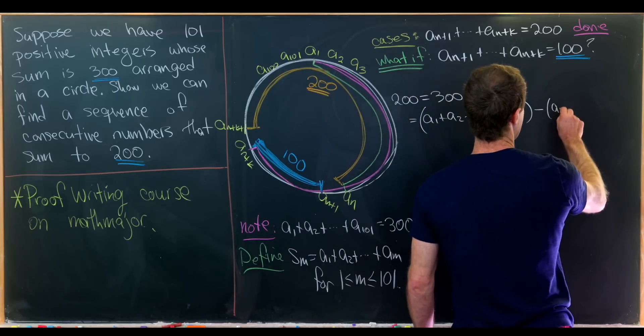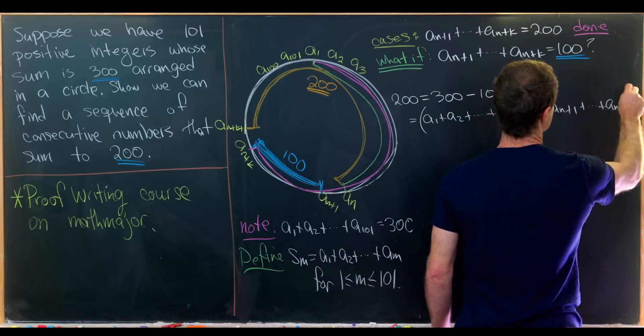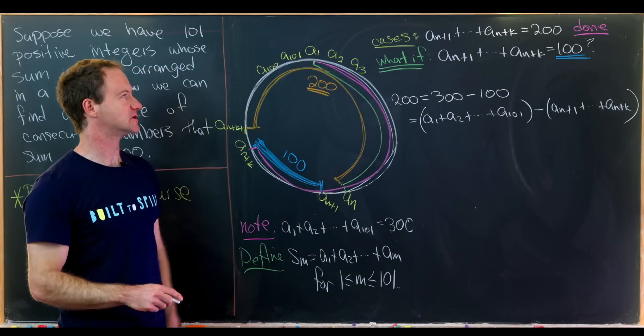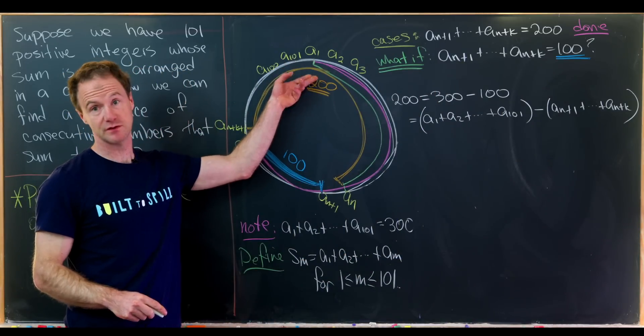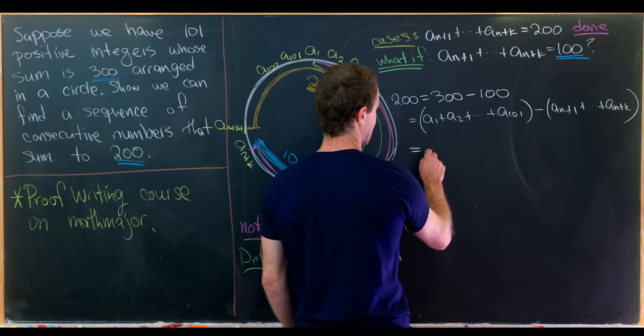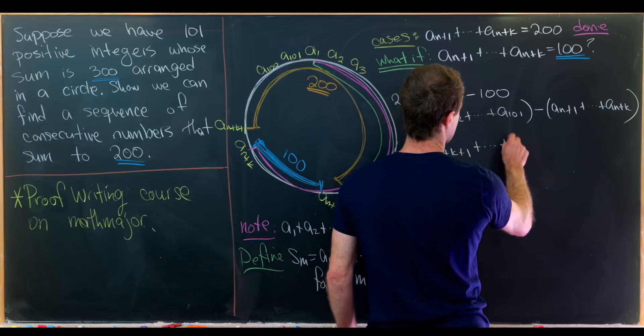Well, then 100 is this partial sum here from an plus 1 to an plus k. So minus an plus 1 added up all the way to an plus k. But then by our picture, we can see that those are consecutive when we do the switch over at the top there.